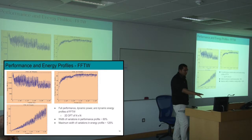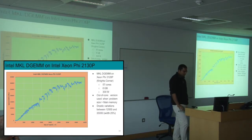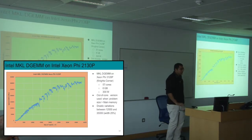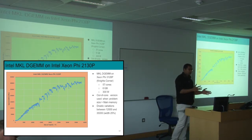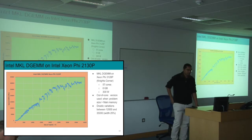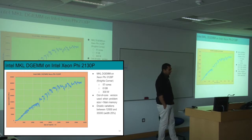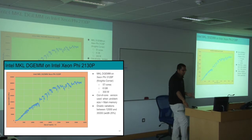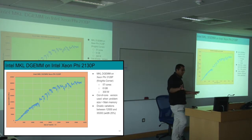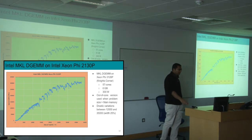This is a two-dimensional discrete Fourier transform of N by N — dense applications. This is Intel MKL on the Intel Xeon Phi accelerator 3120P, which is quite an old accelerator with 57 cores. Now we are in Knights Landing with 72 cores. As you can see, there are quite drastic variations between problem sizes 12,000 and 35,000 with a width of 25%. Think of these profiles not just as profiles, but as performance or energy models that are key inputs to your data partitioning algorithms.